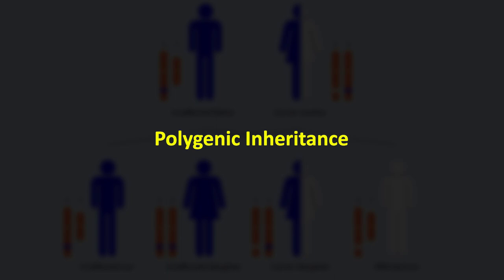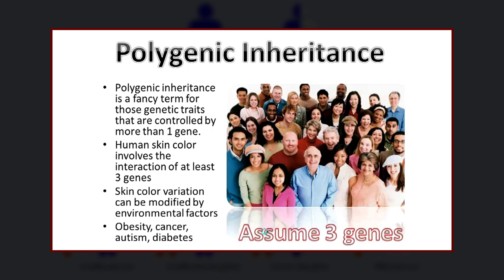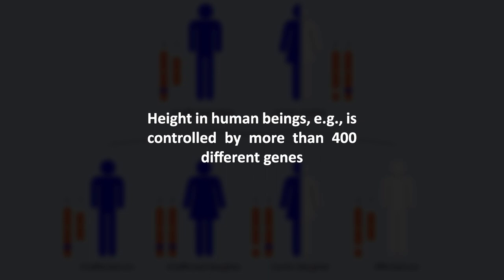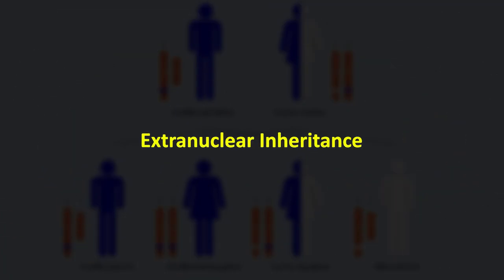Let's now discuss polygenic inheritance. There are some traits controlled by more than one gene. Height in human beings, for example, is controlled by more than 400 different genes. Similarly, pigmentation of the skin or skin color is controlled by at least 4 genes. In fruit flies, the reddish-brown pigment in the eyes is a result of at least 3 genes.